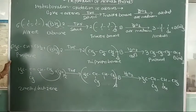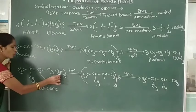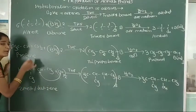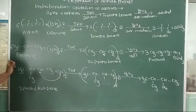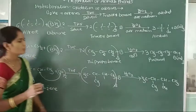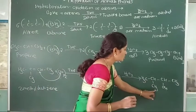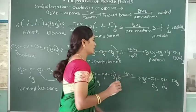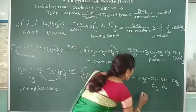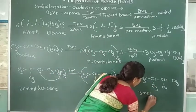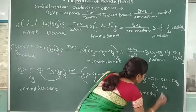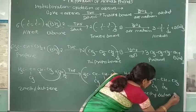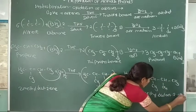According to anti-Markovnikov's rule, boron gets attached to the carbon which carries the maximum number of hydrogen atoms. Therefore, there is formation of CH3-CH(CH3)-CH(OH)-CH2. The name of this compound is 3-methylbutan-2-ol.